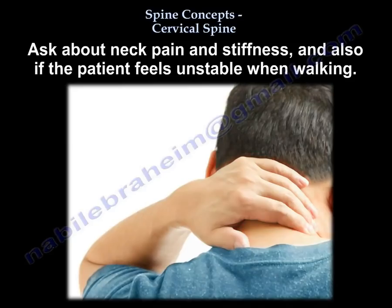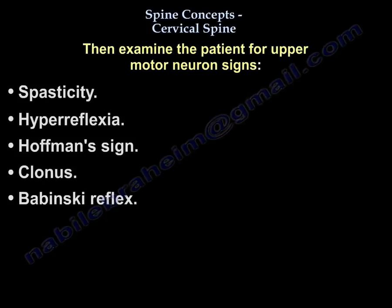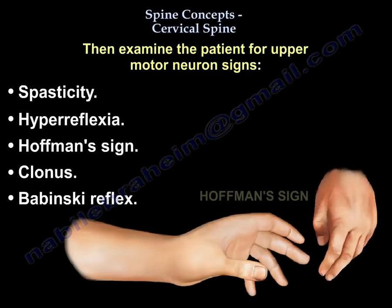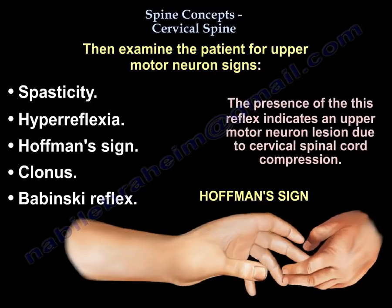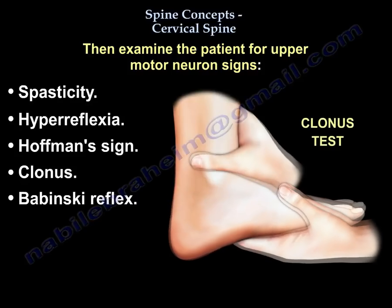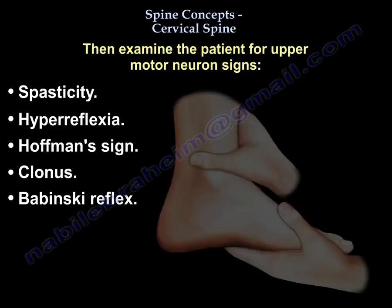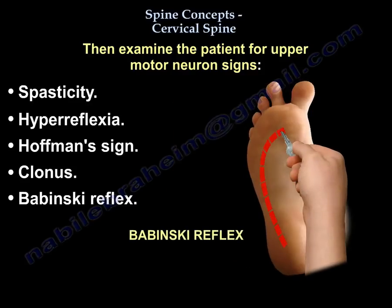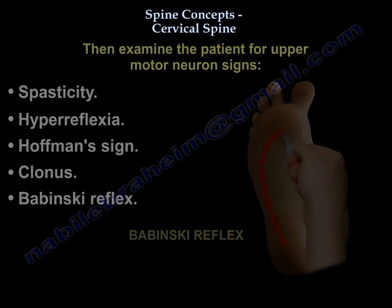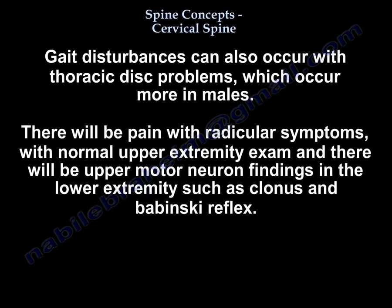Ask them about neck pain and stiffness, and whether they feel unstable when they walk. Then examine them for upper motor neuron signs: spasticity, hyperreflexia, Hoffman sign — the presence of this reflex indicates an upper motor neuron lesion due to cervical spinal cord compression. Also test for clonus and Babinski sign.